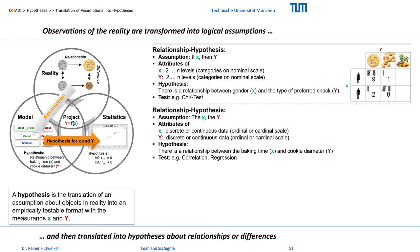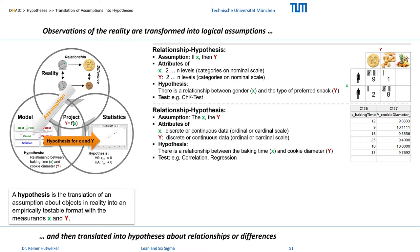We cannot apply the more precise continuous version of the if-then assumption to the gender/snack example, because the statement 'the more gender X, the more preference Y' is pointless. In another example, we could assume that baking time affects the color or diameter of a cookie — the longer the baking time (X), the darker or smaller the cookie (Y). In these cases both X and Y are discrete or continuous numbers on ordinal or cardinal scales. The hypothesis format remains identical: there is a relationship between baking time and cookie diameter, and data could be recorded case by case in two columns of a table. This relationship could be statistically investigated with correlation or simple regression analysis.